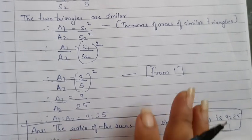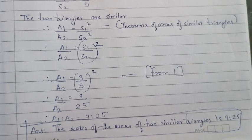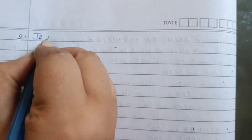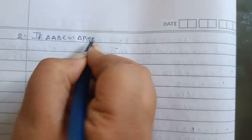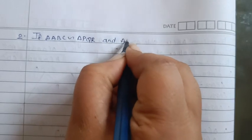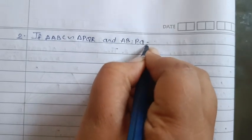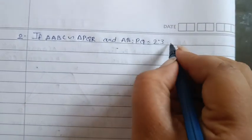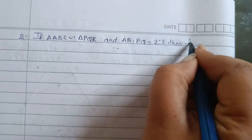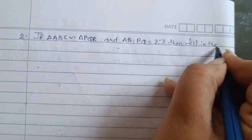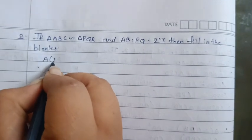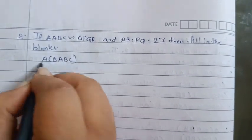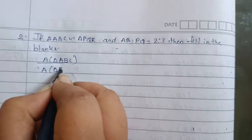Let's go to the second question. If triangle ABC is similar to triangle PQR and AB is to PQ equal to 2 is to 3, then you have to fill in the blanks: area of triangle ABC upon area of triangle PQR.